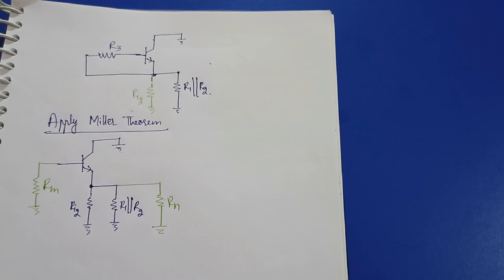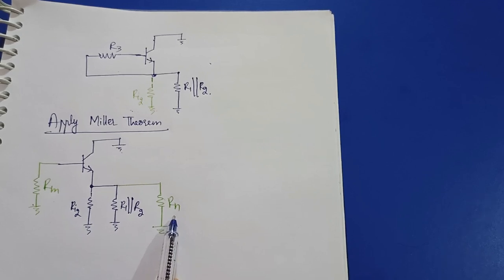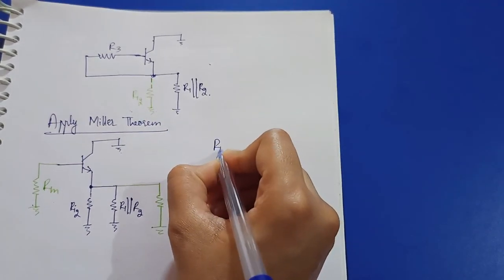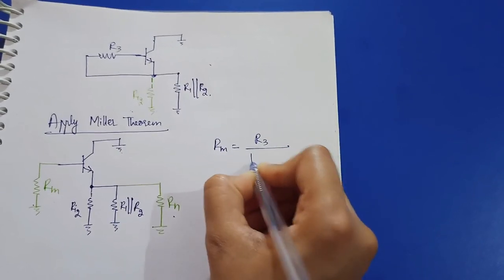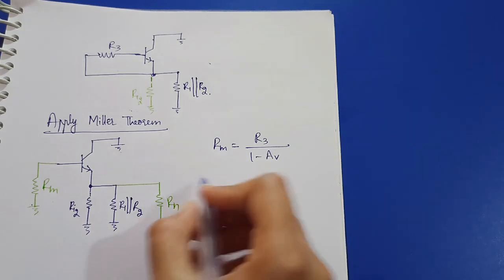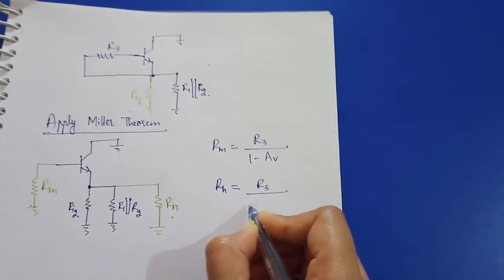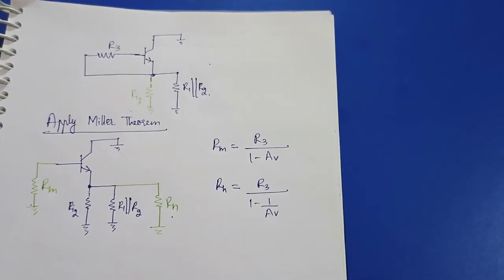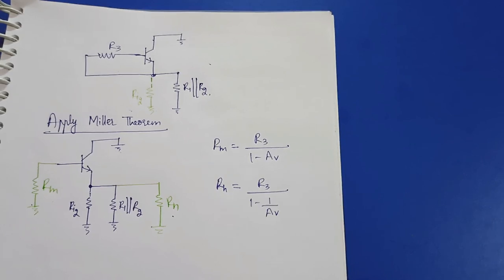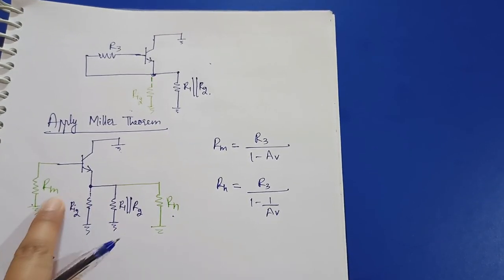After applying Miller's theorem, Rm is at the input node and Rn is at the output node. Rm is given by R3 / (1 − Av). If you don't remember Miller's theorem, please refer to my previous video where I have fully explained it in detail. And Rn is given by R3 / (1 − 1/Av).